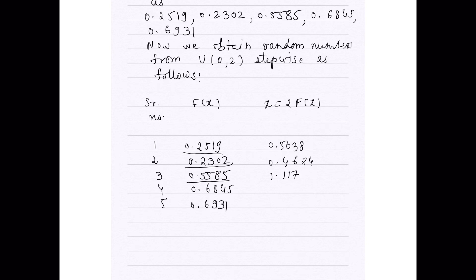Second last value of x is 2 into 0.6845 which gives us 1.369, and the last value of x, that is a random number x, is 2 into 0.6931 which gives us 1.3862.